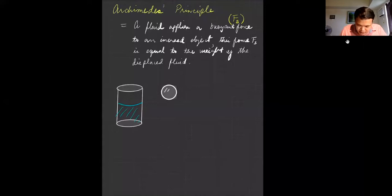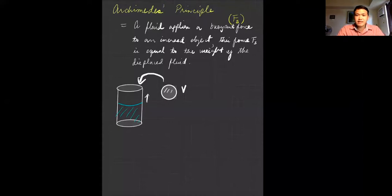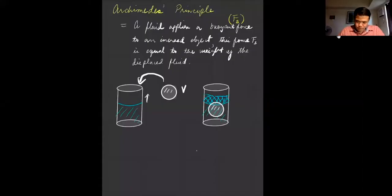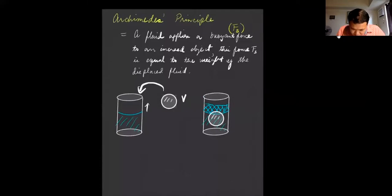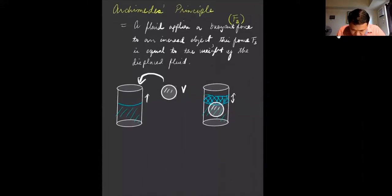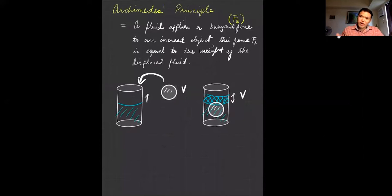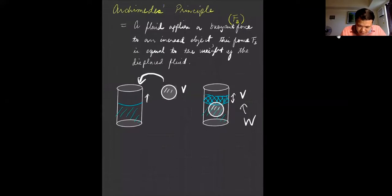Let's say you have a cylinder with water in it and you place a spherical object inside. That object has a volume, and when you put it in, the water level will increase. That increased volume is equal to the volume of the submerged sphere. That displaced volume has a weight, called W, and according to Archimedes, the weight of that displaced fluid gives you the buoyant force.